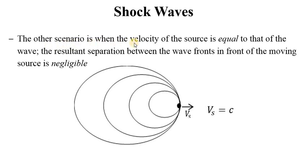The next scenario is when the velocity of the source is equal to that of the wave — Vs equal to C. Then we see this kind of pattern where there is greater length but not much separation in the wavelength as we consider the frontal part of the source as it moves.